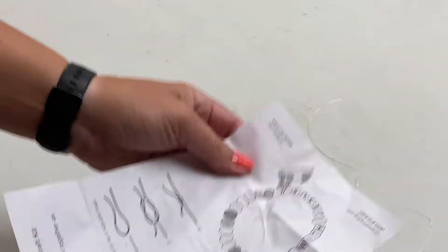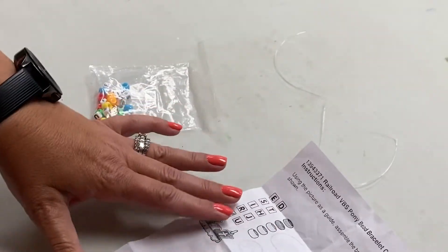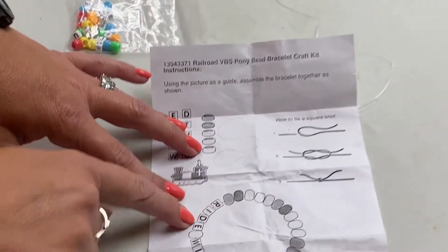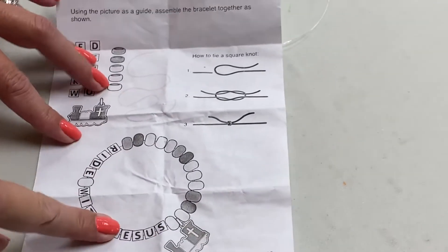All right, here are your instructions. Okay, so this is all that you've got and this is what we're going to make. We're going to say 'Ride with Jesus' and have a cute little charm at the end and a bunch of beads.